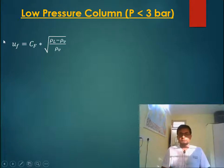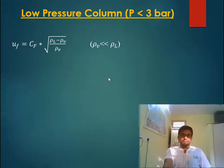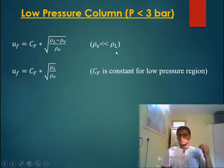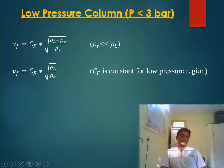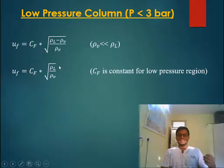In the low pressure region, below 3 bar, vapor density is very small so FLB remains typically less than 0.1. For fixed plate spacing, Cf will be more or less constant. Since vapor density is much less than liquid density, flooding velocity is approximately proportional to Cf × sqrt(rho_l / rho_v), meaning flooding velocity is inversely proportional to the square root of vapor density.